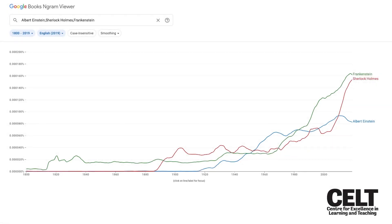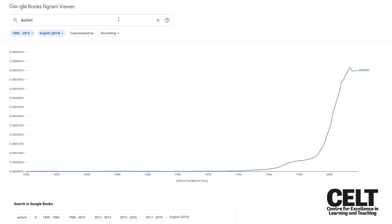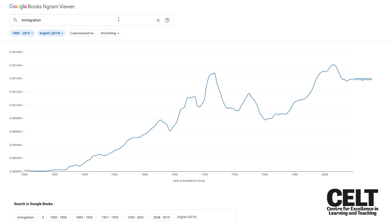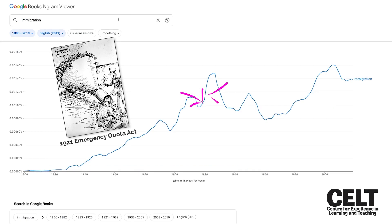Ngram viewer tells you how frequently a topic is mentioned in books. It provides a visualisation of how topics have grown in interest over the years, allowing you to match changes with historical events.